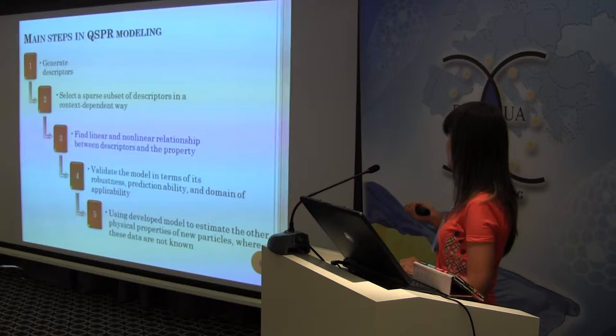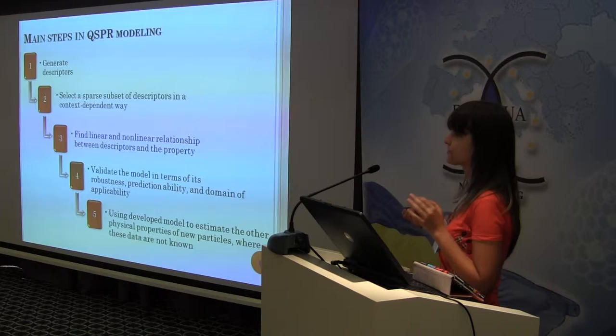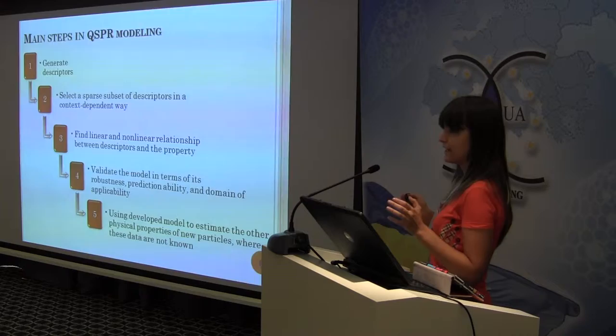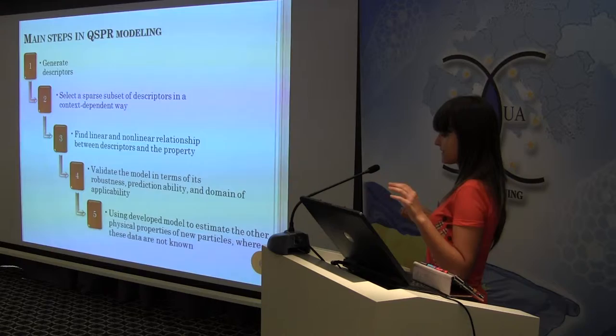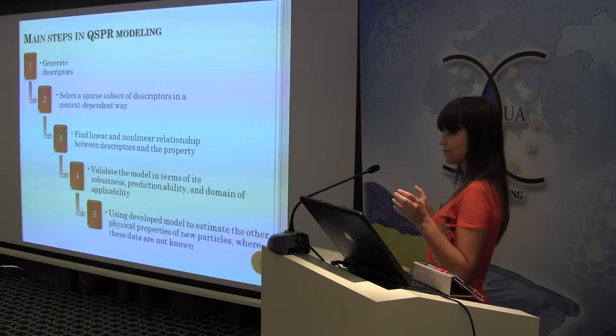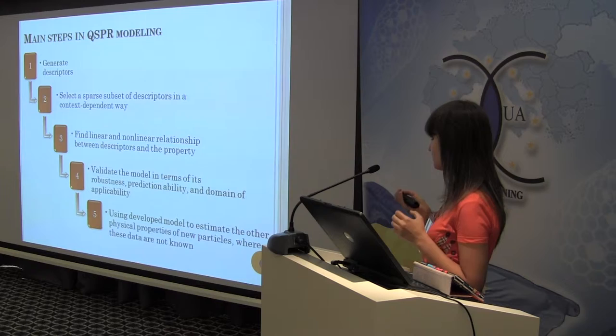Here is a brief schema of how we investigate our dataset. In the first step, we generate and calculate some descriptors — a descriptor is just a number which characterizes our particle; it could be size, polarity, or something like that. After that, we select a set and try to build a model: a final equation which should explain how our model can predict Curie temperature.